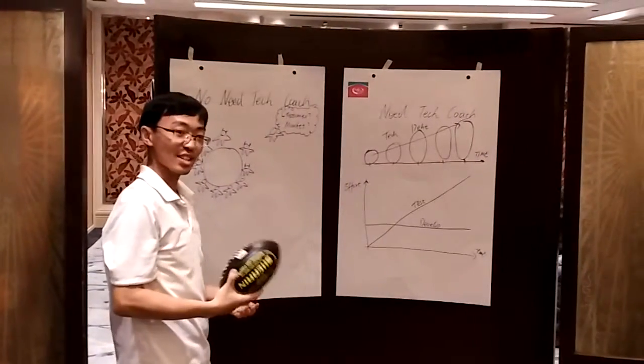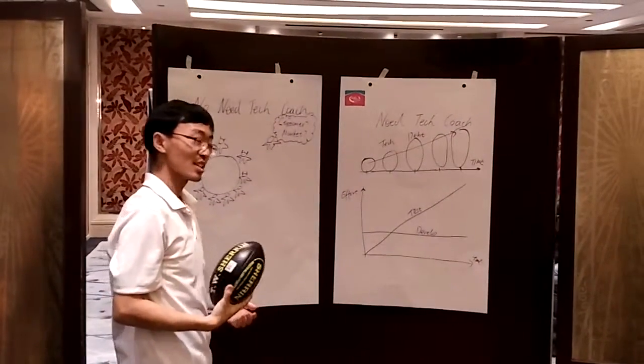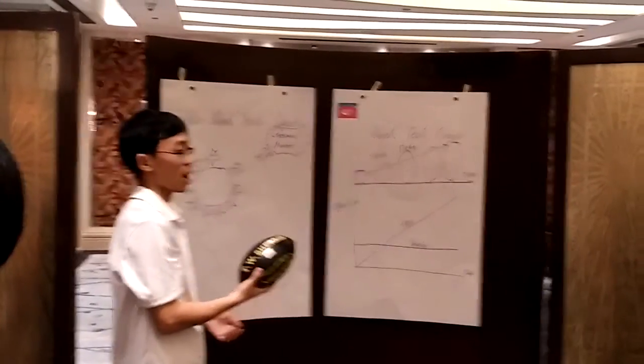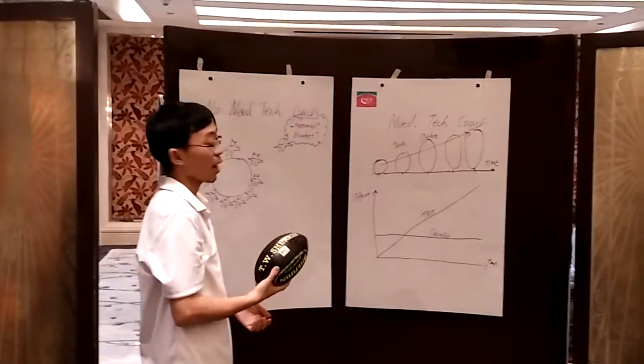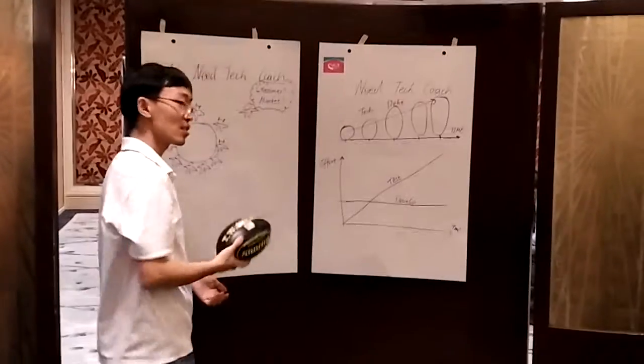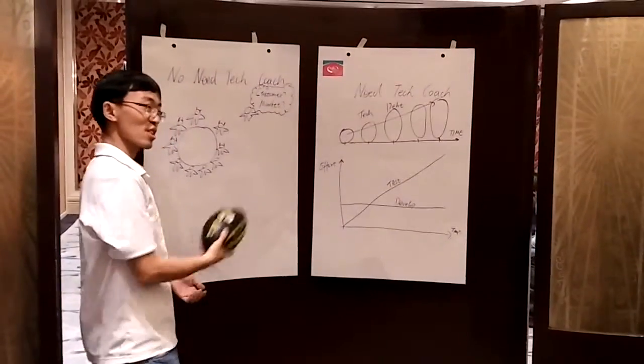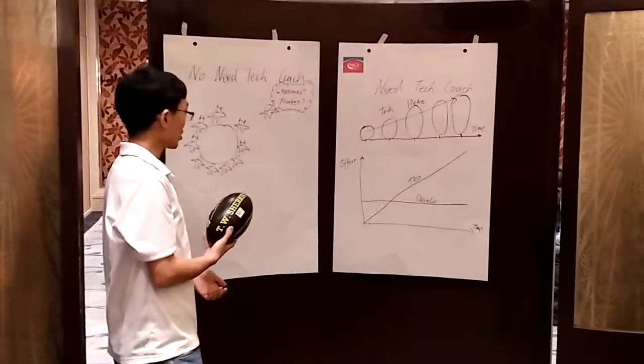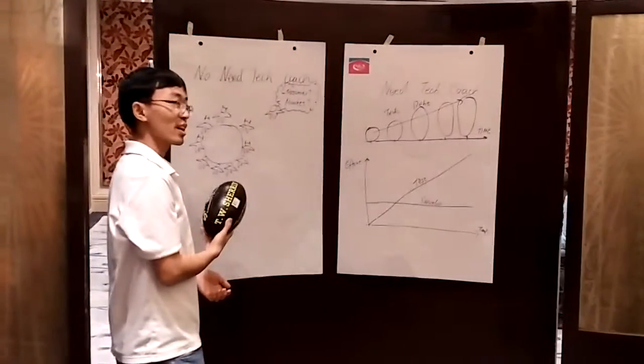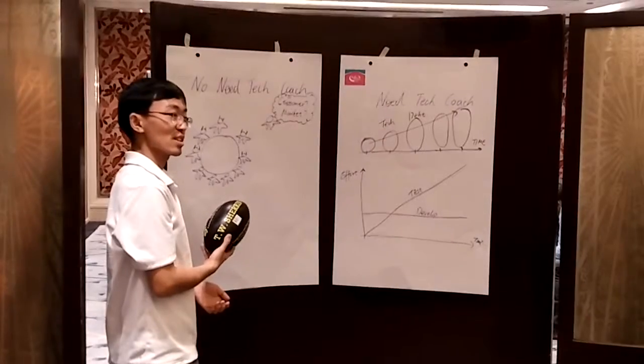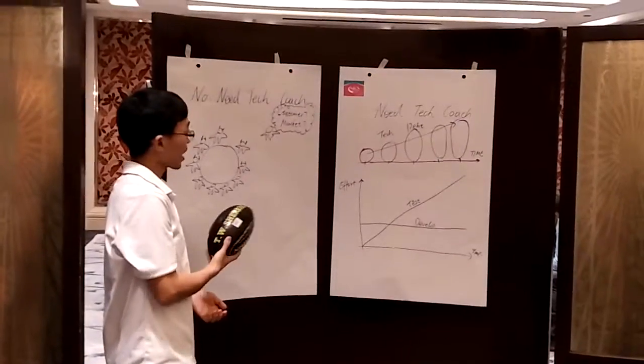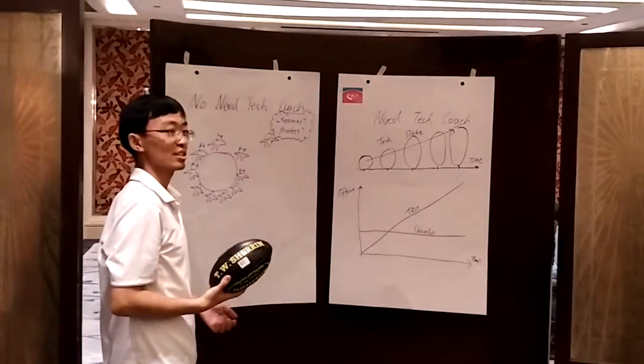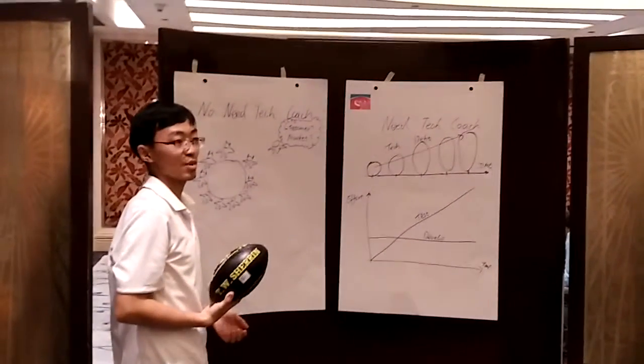This is two examples to describe why we need help and why we don't need help. First example is, there is a very new company. There are several engineers, very experienced engineers, but they are surviving. They don't find the market, they don't find their customers.